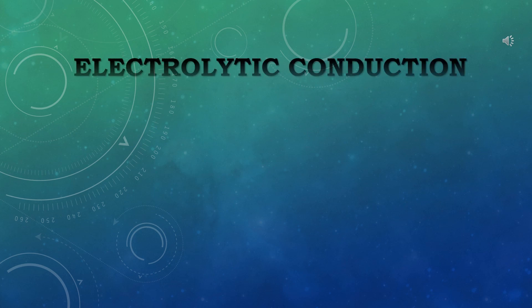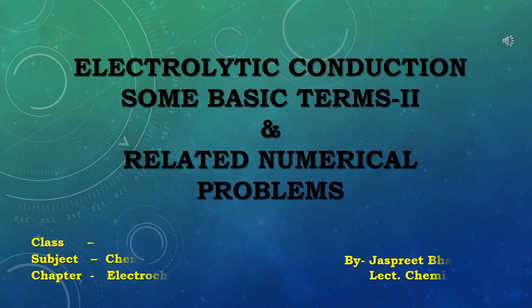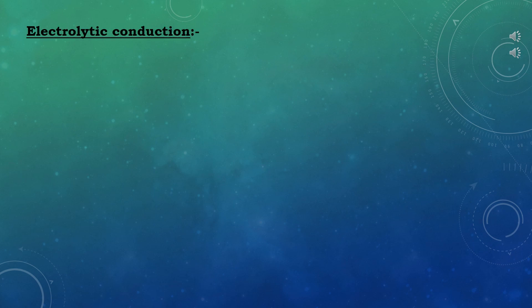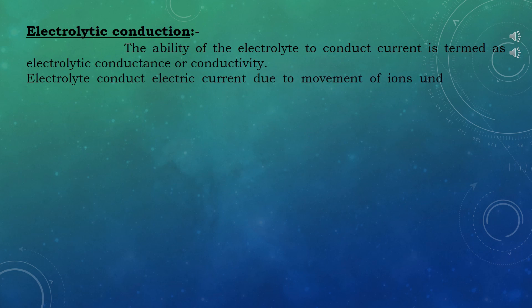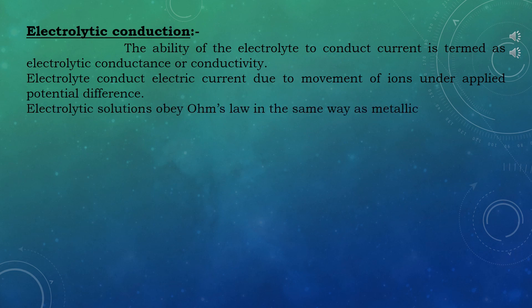Hello students, today's topic is also related to electrolytic conduction — 'Some Basic Terms, Part Two' from your Plus Two chemistry book, chapter Electrochemistry. In this topic we will also do some numerical problems. Electrolytic conductance, or conductivity, is the ability of the electrolyte to conduct current. Electrolytes conduct electric current due to the movement of ions under applied potential difference, and electrolytic solutions also obey Ohm's law in the same way as metallic or electronic conductors do.